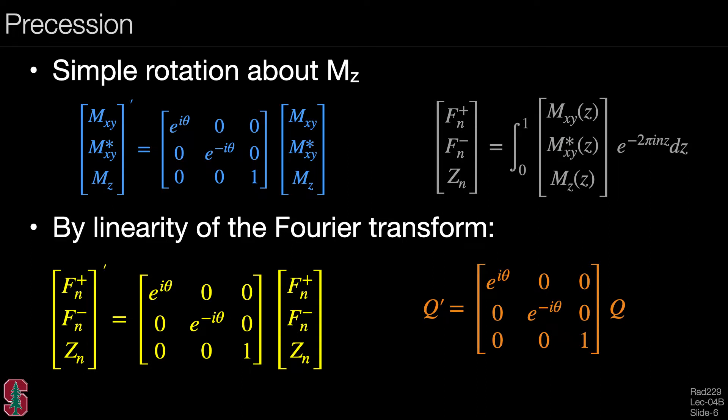Precession is a simple rotation about MZ. We recall from previous lectures, if we have a complex magnetization representation, we can apply a simple rotation with this diagonal matrix as shown in the top right. Because the transformation to EPG is linear, the same rotation can be applied to a single order n of F and Z states, as shown in the bottom left.